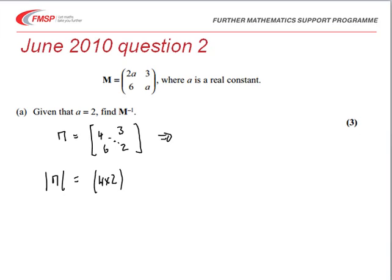And subtracting from that the product of the other diagonal, 6 multiplied by 3. So that the determinant is equal to negative 10.